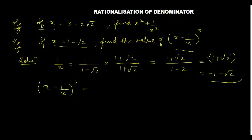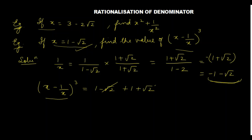Now we find x minus 1 by x whole cube. We put in the values: x is 1 minus root 2, and minus 1 by x gives plus 1 plus root 2. So 1 minus root 2 plus 1 plus root 2 — root 2 cancels with root 2, and we get 2. So x minus 1 by x equals 2, and the cube of 2 is 8. So 8 is your answer. We will find out new examples in the next video. Till then, bye.